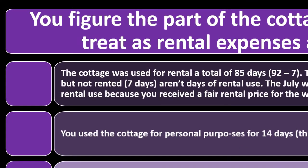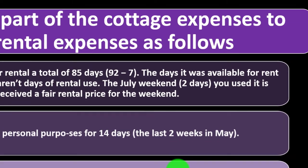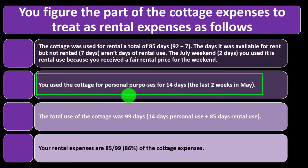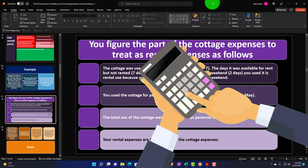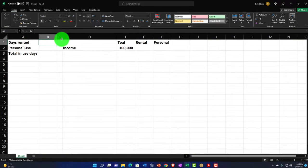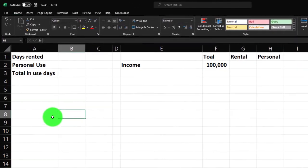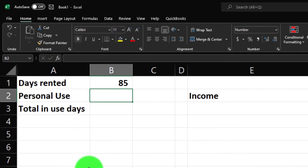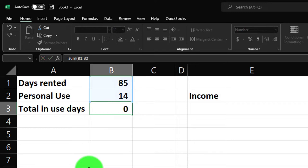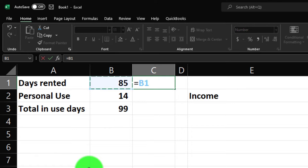Let's look at an example. We've got a cottage that we rented out. You used the cottage for personal purposes for 14 days. Total usage was 99 days — 14 days personal use and 85 days rented — totaling 99. That gives us our ratio of 85 over 99. So the allocation ratio would be 85 divided by 99 for rental use, and 14 over 99 for personal use.